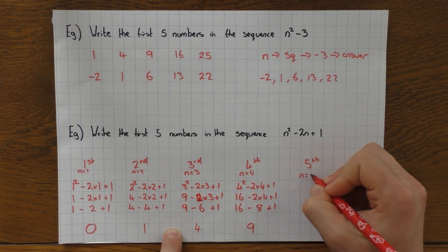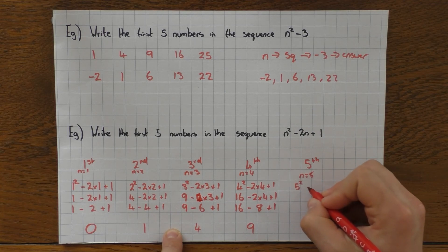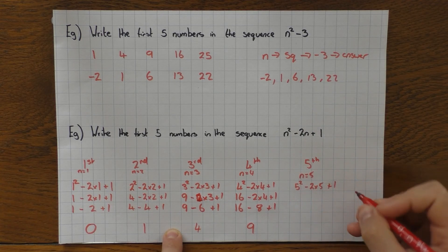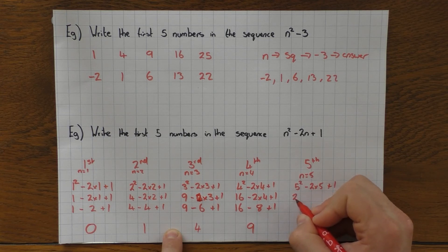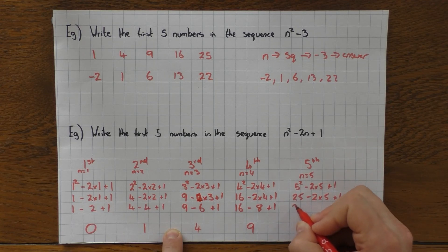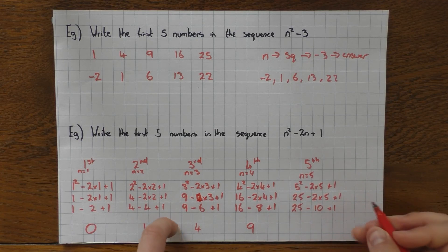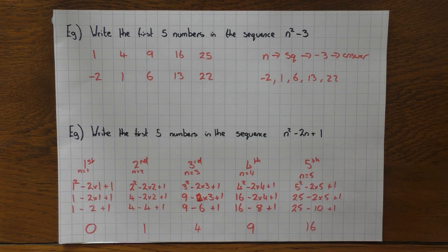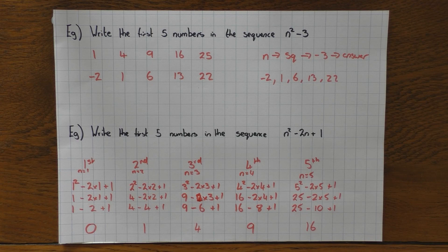And the final one, the fifth number — n would be 5. So 5 squared minus 2 times 5 plus 1. BIDMAS — indices first: 5 squared is 25. Then multiplication: 2 times 5 is 10. So 25 take away 10 is 15, plus 1 is 16. So that's a quick heads up of how you would generate a sequence that has more than one n in it. It does involve substitution, you need to take your time, remember BIDMAS, and be careful of your negatives. Thanks for watching, guys.